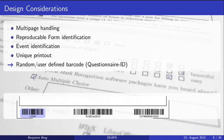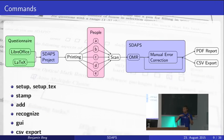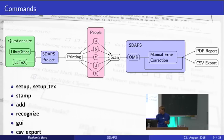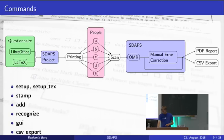The general process is: create the questionnaire, pass it to the main program which extracts all the metadata, create the printable document, hand it out, scan it back in, pass it to the main program again for optical mark recognition, do manual error correction if needed, and export the data. These steps map to different commands: setup, stamp, add, recognize, UI, CSV export, and a report command that creates a PDF document.